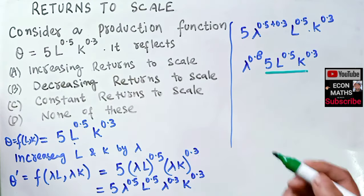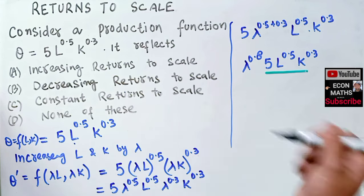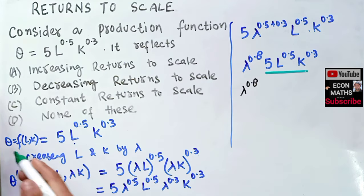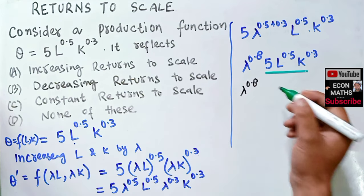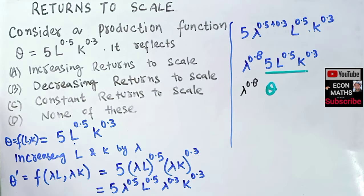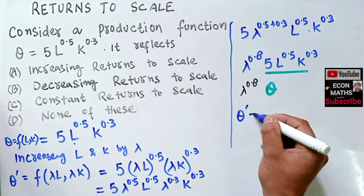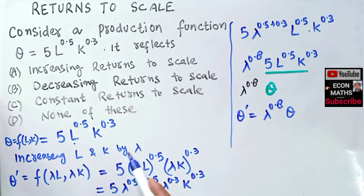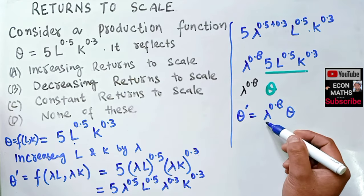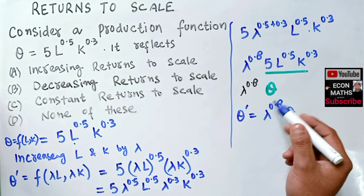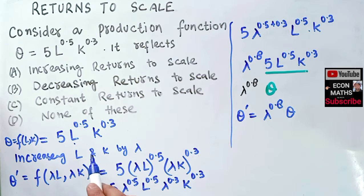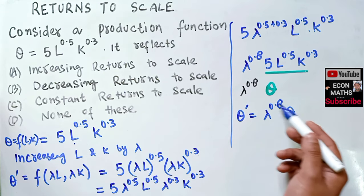We can see that L^0.5 * K^0.3 is our original production function Q, so substituting back, Q' = lambda^0.8 * Q. When labor and capital are increased by factor lambda, our new production function increases only by lambda^0.8, which means the exponent 0.8 is less than 1.